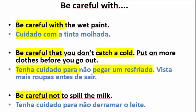Sentence Structure Number 5: Be careful with. Examples: 1. Be careful with the wet paint. 2. Be careful that you don't catch a cold. Put on more clothes before you go out. 3. Be careful not to spill the milk.